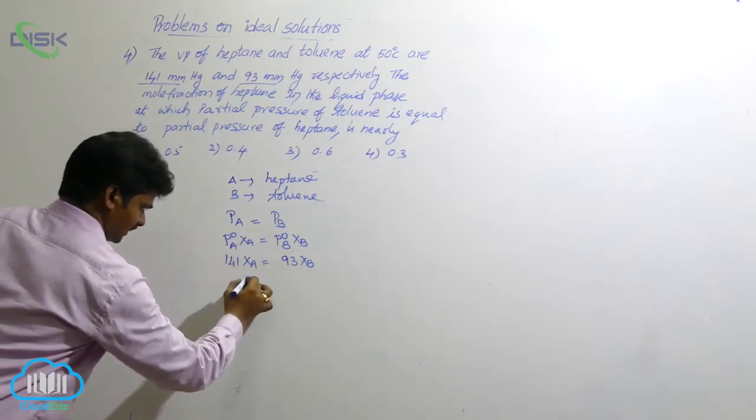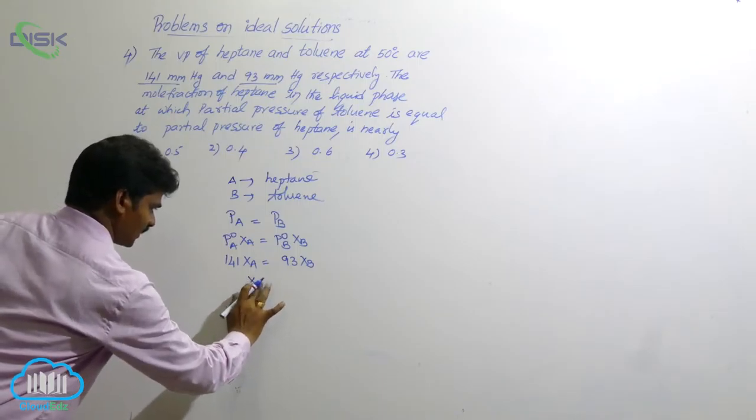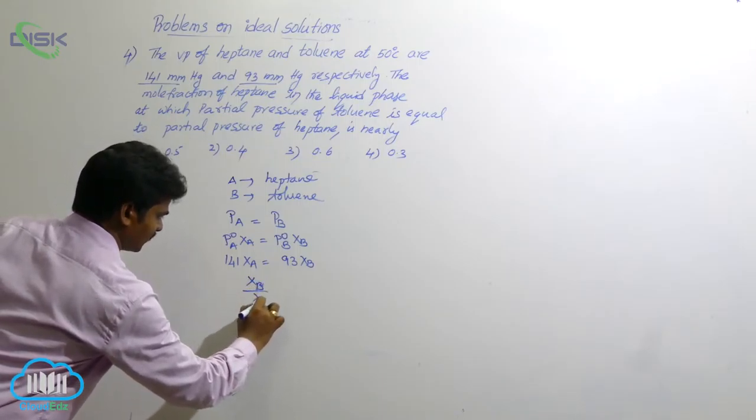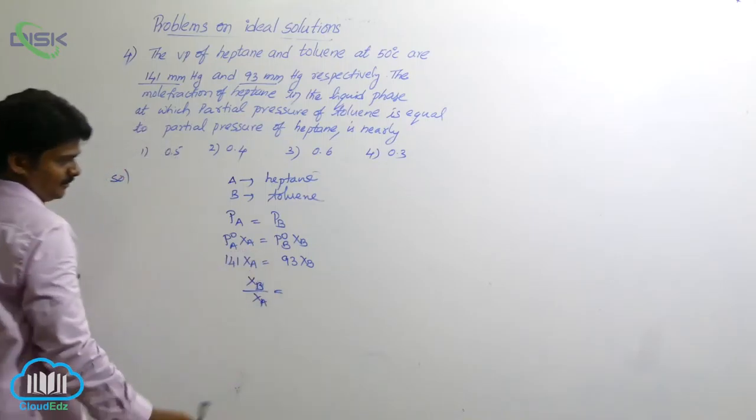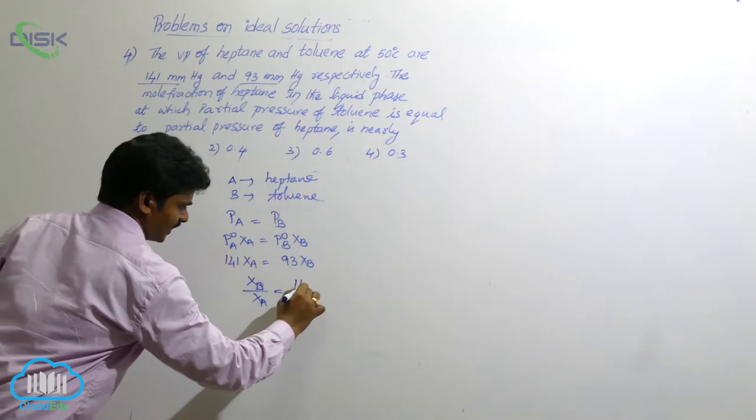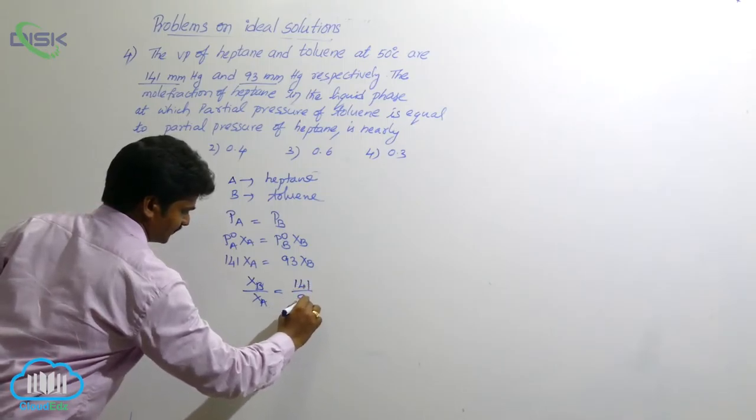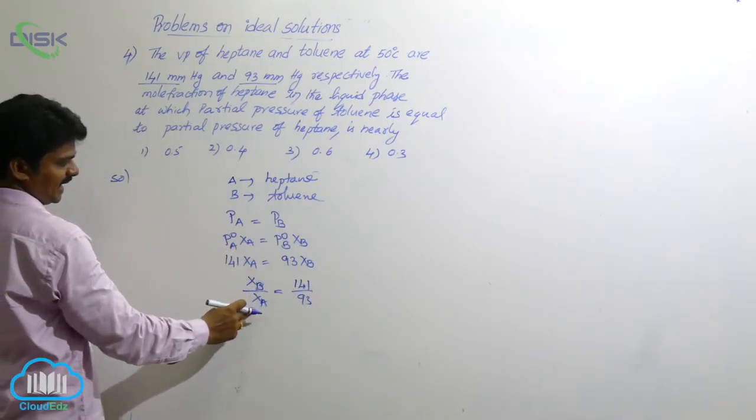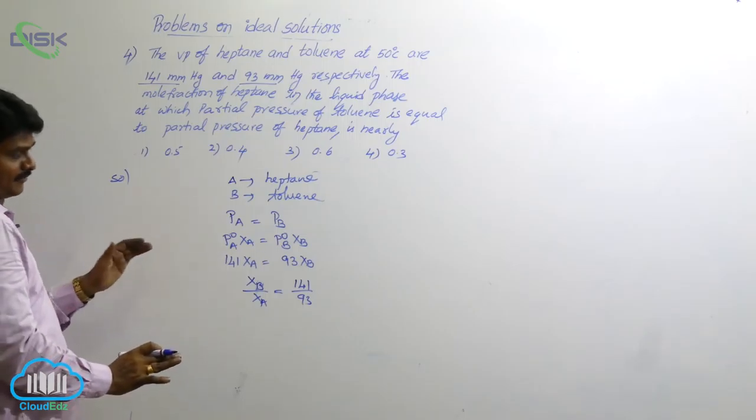So, how to get that one? So, take this one, XB by XA equals to - what is the value? Then, we get 141 by 93. XB by XA is equal to 141 by 93.